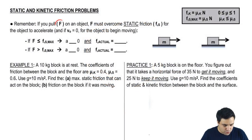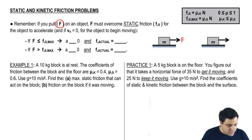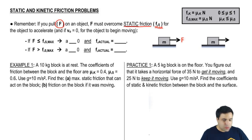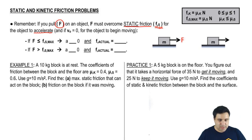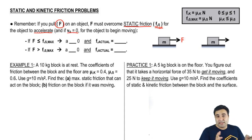If you pull with a force F on an object, that force F has to overcome — has to be greater than — the static friction, the maximum static friction, the threshold of friction for the object to accelerate. You have to overcome your maximum static friction to accelerate, and if the initial velocity was zero, that means you now have an acceleration and would begin moving.